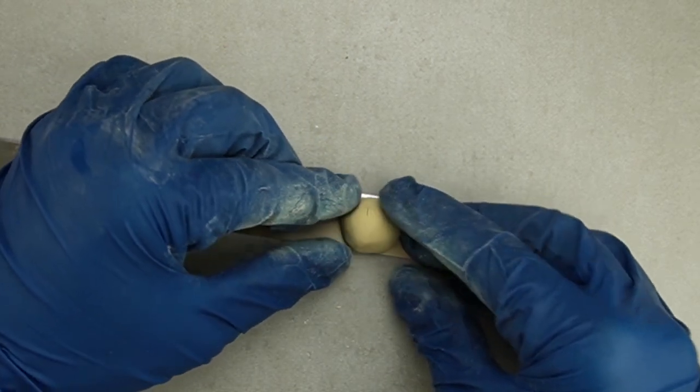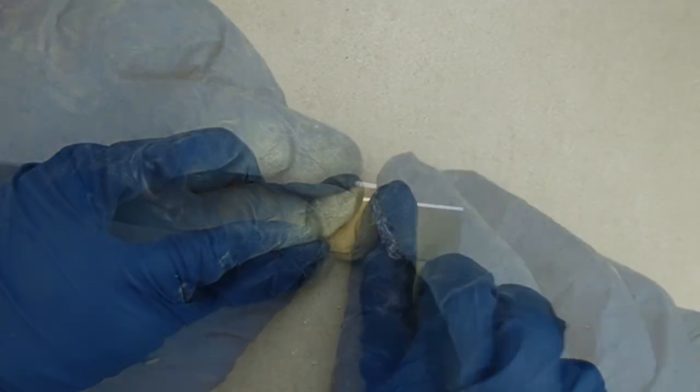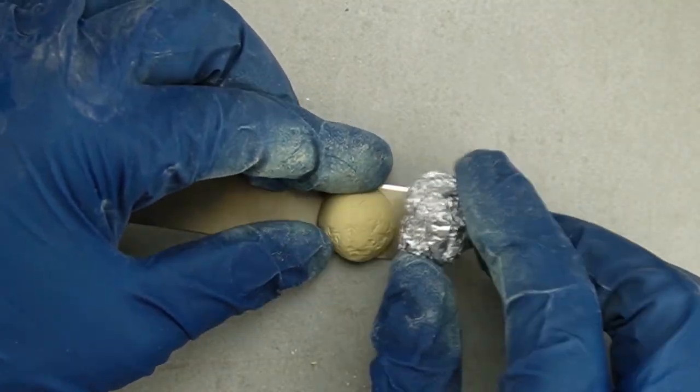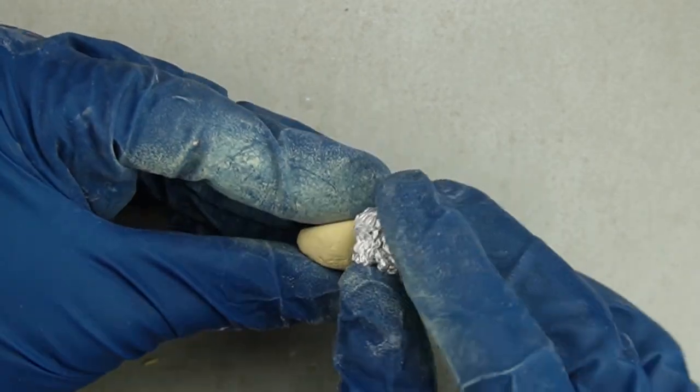I'm shaping the dough into a rustic looking round loaf. Adding texture to miniature food is a really easy step and it goes a long way in making it look more realistic.